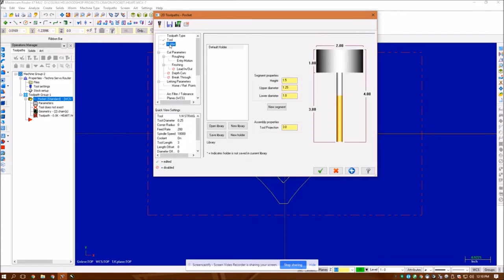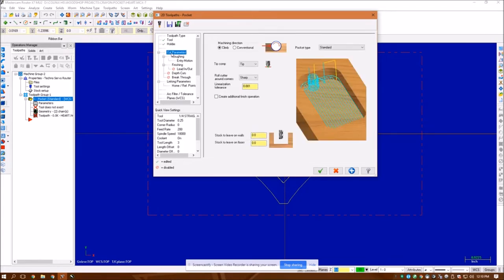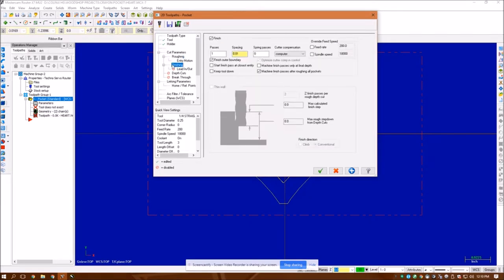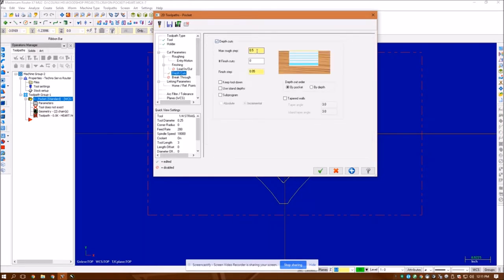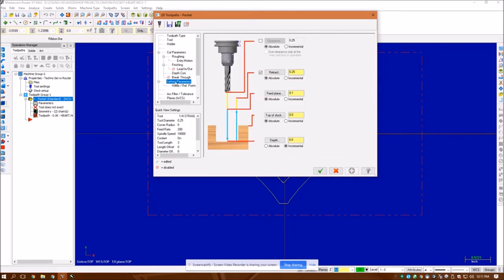I work my way down here. Holder, no changes. Cut parameters, those are good parameters. I do want to finish it. That'll clean it up. Lead in, lead out is turned off because it's a pocket. Depth of cut, I always set this as a safety. I'm going to set it 0.15. I'm not actually going to use this feature, but I just do it as a safety. Breakthrough, and then linking parameters, these are all absolute. And this is my overall depth of cut in a negative value because the top of stock is set at zero. So I think I'll go negative 0.14. Because I'm going under 0.15, it'll do it in a single pass.